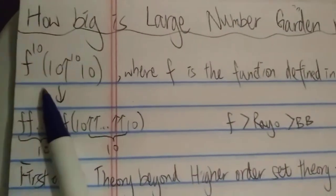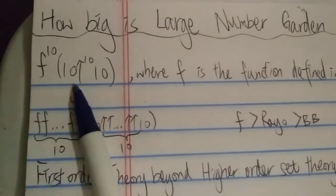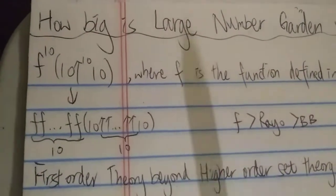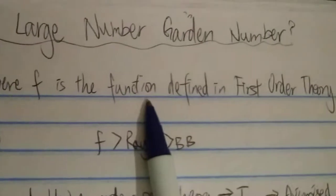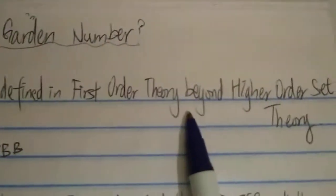So basically it's written in this way: f10 of 10, up arrows 10, 10, where f is the function defined in the first order theory beyond higher order set theory.